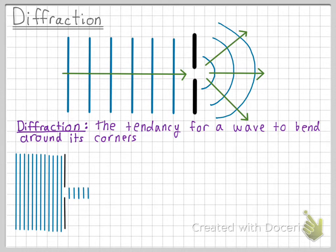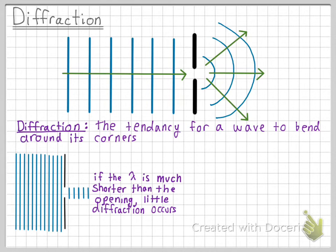The degree to which a wave bends around the edges is based on the size of the opening compared to the wavelength. If the wavelength is small compared to the opening, there will be very little diffraction. And if the wavelength is large compared to the opening, there will be a greater degree of diffraction.